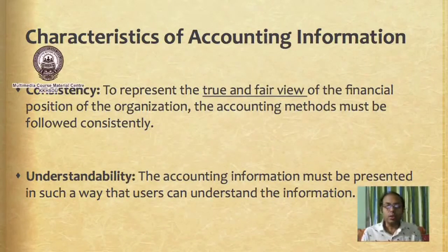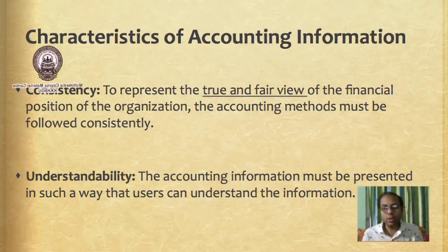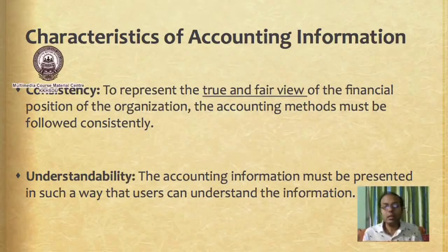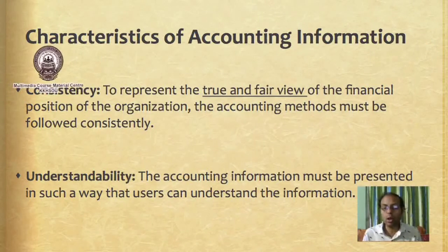Consistency: the financial statements must show a true and fair view of the financial position of the business. This is possible if the accounting method applied to record, summarize, and classify transactions is consistently followed — that is, one particular method should be followed consistently over a longer period. However, this does not mean the organization cannot change its accounting system; it can change, but proper provision and proper information must be provided to all stakeholders.